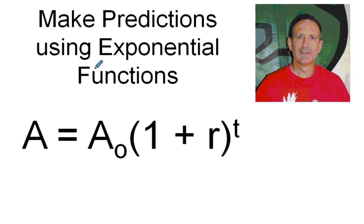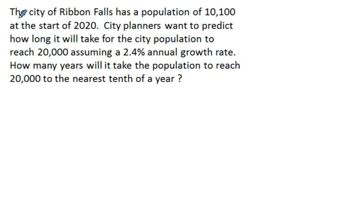Make predictions using exponential functions. Here we have a situation. The city of Ribbon Falls has a population of 10,100 at the start of 2020. City planners want to predict how long it will take for the city population to reach 20,000, assuming a 2.4% annual growth rate. How many years will it take for the population to reach 20,000 to the nearest tenth of a year?